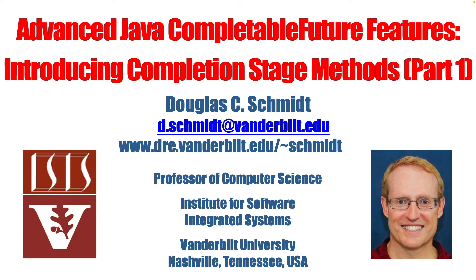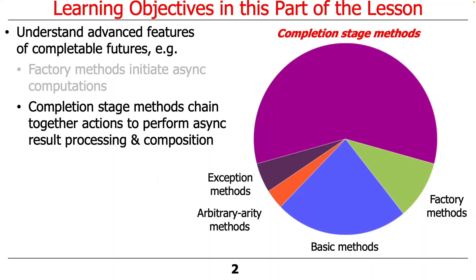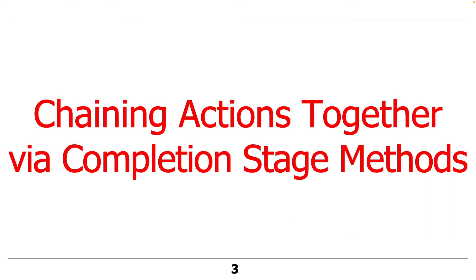Now that we've wrapped up the discussion of factory methods in the Java CompletableFutures API, let's turn our attention to completion stage methods. There are actually many different parts to completion stage methods, so we're going to break this discussion up into several subsections. In general, completion stage methods chain together actions, known as dependent actions, to perform asynchronous result processing and to compose together results when one or more previous stages finish.